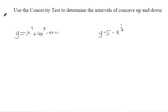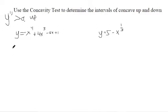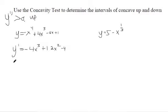Is the second derivative positive or negative? Here's a quick formal definition using mathematical notation: a graph is concave up where the second derivative is greater than 0. For this problem, we want the second derivative. So starting from negative 4x cubed plus 12x squared minus 4, the second derivative is negative 12x squared plus 24x.